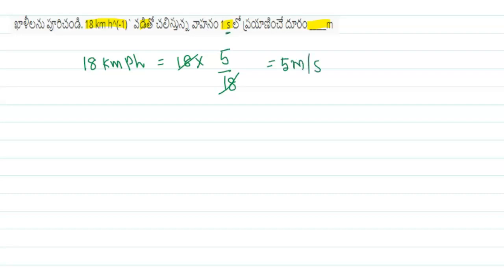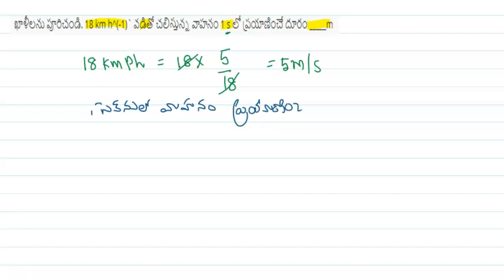If you want to convert, the conversion factor gives 5 meters per second. That is 5.